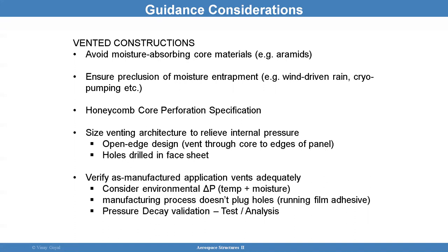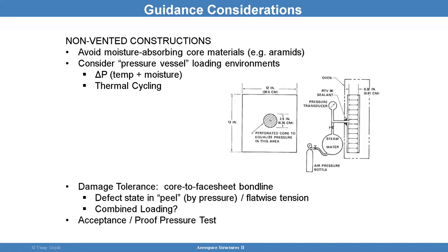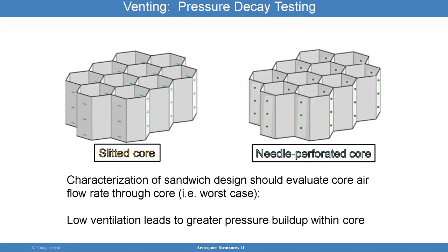For non-vented constructions where air can be entrapped, we want to avoid moisture-absorbing core materials, consider pressure vessel loading environment in the design, perform thermal cycling, and ensure good damage tolerance through core-to-face sheet bond line fracture mechanics. We want combined loads considered in the assessment — axial loading compression plus internal pressure — and possibly implement a proof test to verify the bond lines. There are also other types of venting architectures such as slitted core or needle-perforated core. Low ventilation leads to greater pressure buildup within the core.